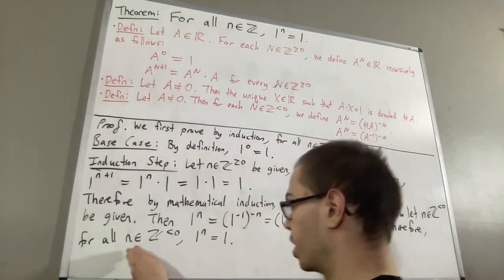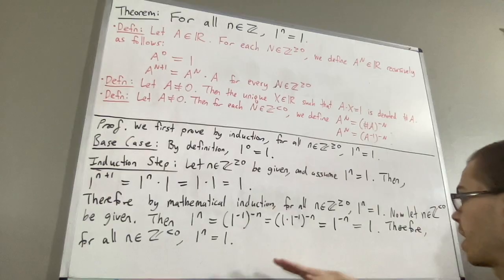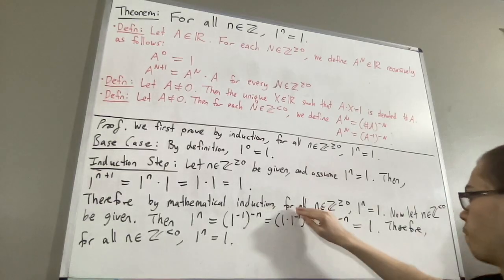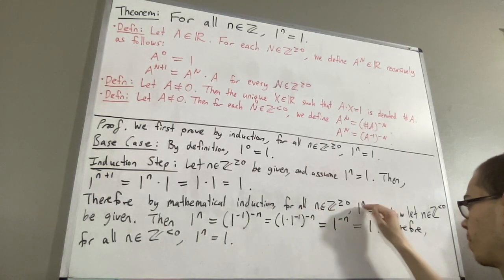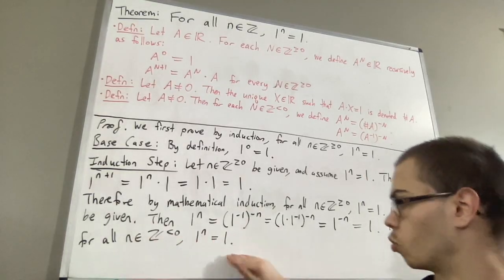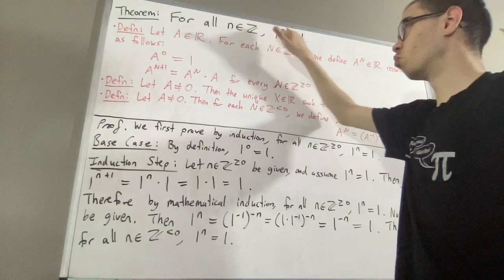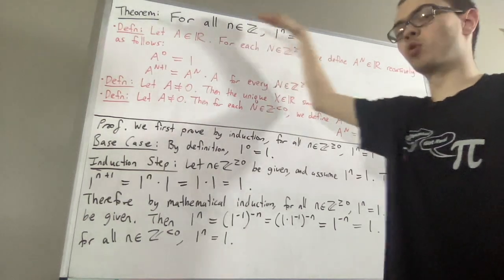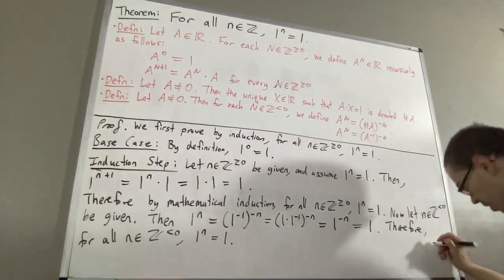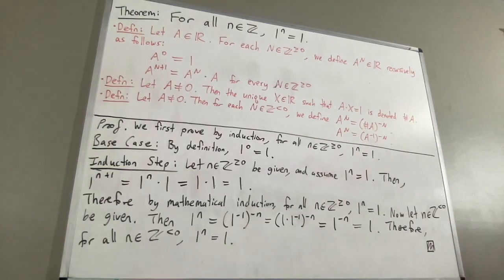So, we've established for every non-negative integer n, 1 to the power of n is equal to 1, and for every negative integer n, 1 to the power of n is equal to 1. Therefore, we've proven for every integer n, 1 to the power of n is equal to 1, so that proves the theorem. This completes the proof. And that's pretty much it for this video.